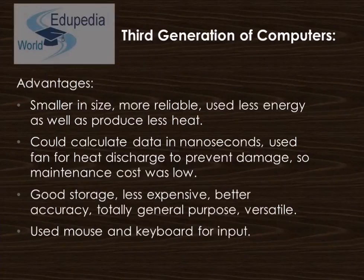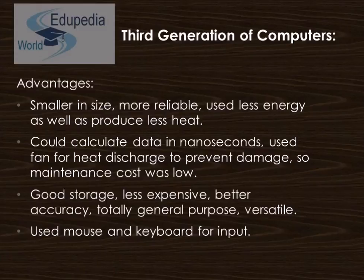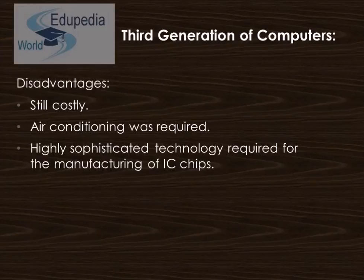Features include they are smaller in size, more reliable, use less energy, and produce less heat. They could calculate data in nanoseconds and used fans for heat discharge to prevent damage, reducing maintenance costs. They have good storage, are less expensive, offer much better accuracy, and are totally general purpose and versatile. Mouse and keyboard were introduced as input devices instead of punched cards and magnetic tapes. However, systems were still costly, required air conditioning, and highly sophisticated technology was needed for manufacturing integrated chips.